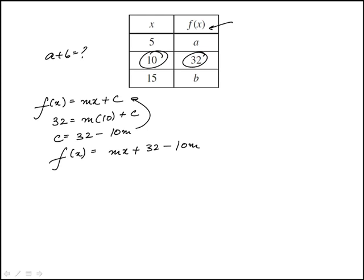Now we know that when the input is 5, f(5) is a. Let's see if the terms will cancel out. f(5) would be 5m plus 32 minus 10m.